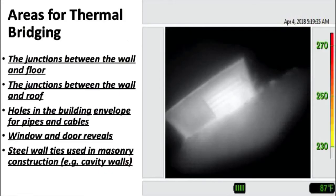Here's a floor register example with a fire on the first floor beneath it. Areas of thermal bridging include junctions between the wall and the roof, holes in the building envelope for pipes and cables, windows and door reveals, and steel wall ties used in masonry construction. The insulation or caulk around doors and windows can fail, showing heat behind it — that's thermal bridging. Keep that in mind when you're looking for these types of heat transfer.